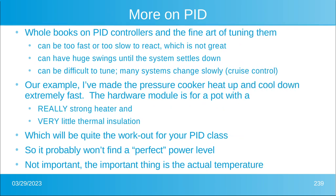Whole books are written on PID controllers and the very fine art of tuning them. They can be too fast, they can be too slow, and neither one of those is great. They could have huge swings until the system gets on track. They can be difficult to tune because a lot of things change slowly — for example, the temperature of my aquarium does not go up and down on a moment's notice. In the example we created with the pressure cooker, I made it so that the heat up and cool down is extremely, extremely fast. This hardware module is for a hypothetical pressure cooker that has a really strong heater and almost no thermal insulation, which is why it cools down so quickly. This will be quite a workout for the PID class that I want you to write.